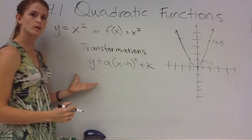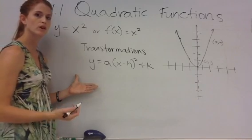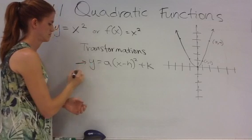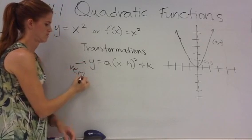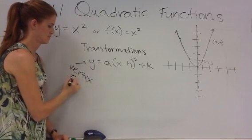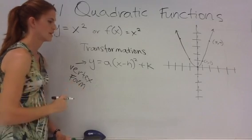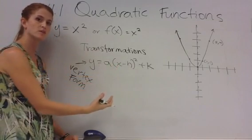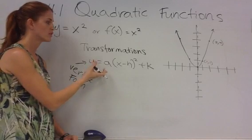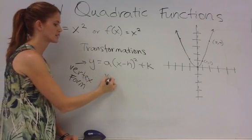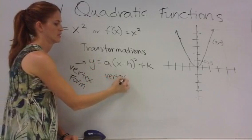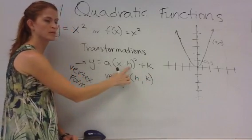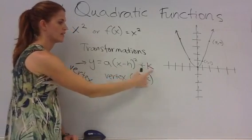This is also known as vertex form for a quadratic function. This is vertex form because it's really easy to see the vertex when it's written this way. For this transformation, the vertex is written h, k. So whatever number is here goes there, and then the k goes here.